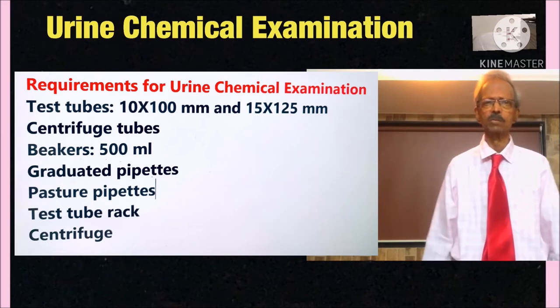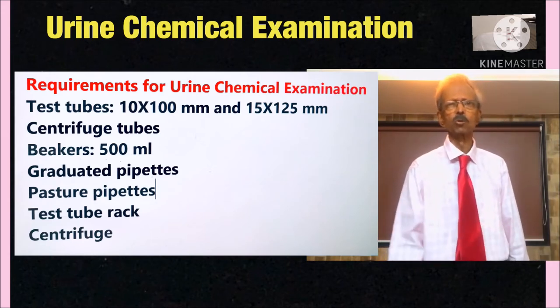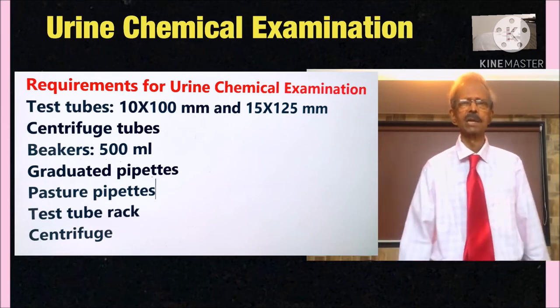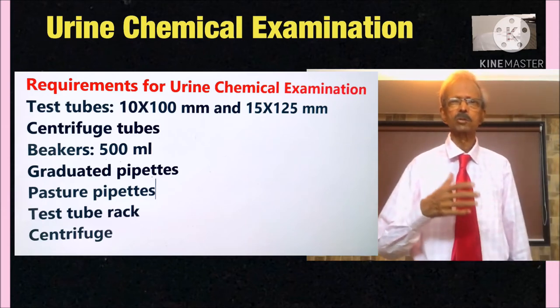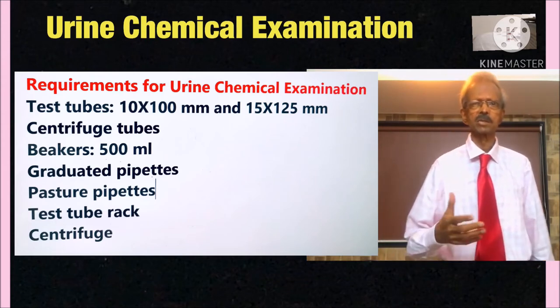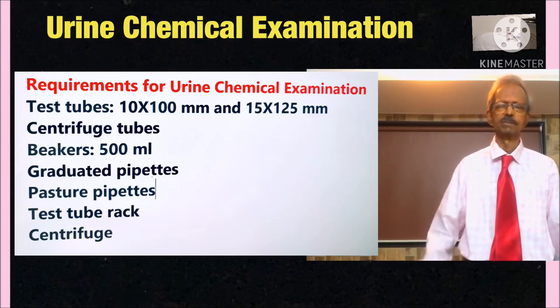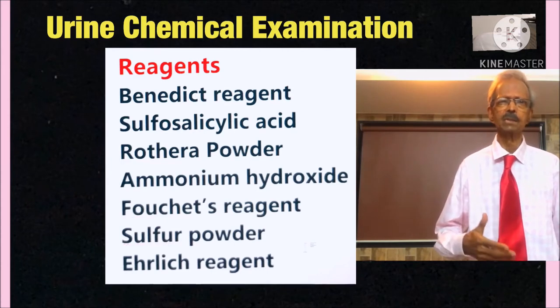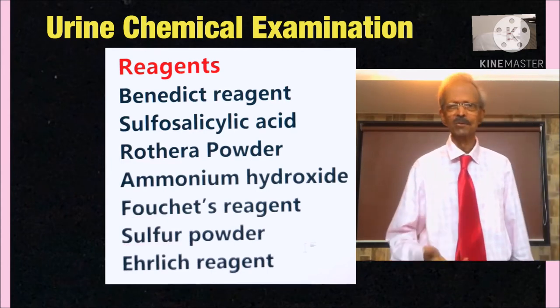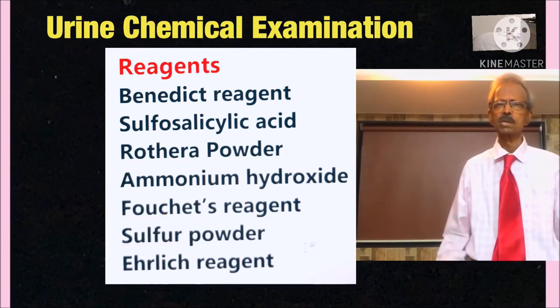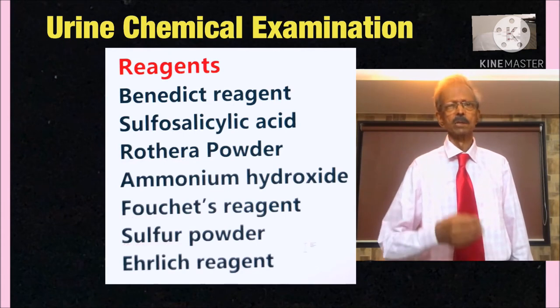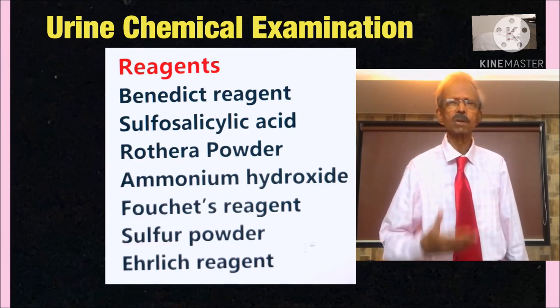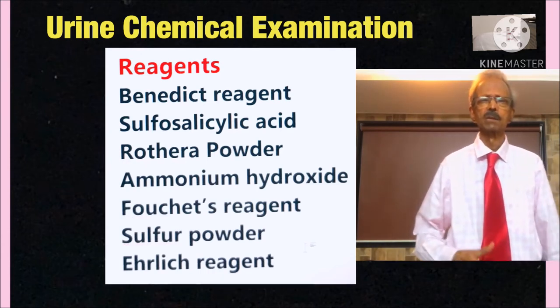These are all the requirements for urine chemical examination. Test tubes small size and medium size, centrifuge tubes of 15 ml, graduated pipettes, Pasteur pipettes, test tube rack, and reagents. Benedict reagent for sugar determination. Sulfosalicylic acid for protein determination. Rothera powder for ketone bodies determination along with ammonium hydroxide. Fouchet reagent for bile pigment determination. Sulfur powder for bile salt determination. And Ehrlich reagent for urobilinogen determination.